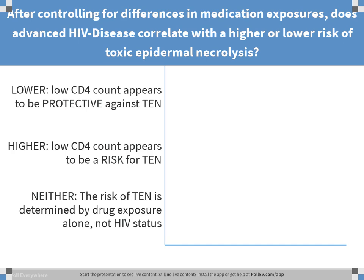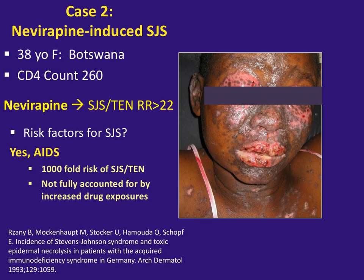She does have a risk factor for SJS, and it is actually AIDS itself. A large German cohort from 1993 found about a thousand-fold increased risk of SJS and TEN that was not fully accounted for by increased drug exposure — it was not entirely because of the drugs they were exposed to. They were all exposed to culprit drugs, but that did not account for the entire increased risk over the general population exposed to those same drugs.